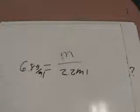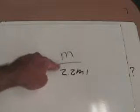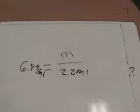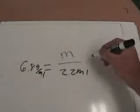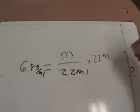Now, in order to solve this, what we have to do is, we're going to undo what's being done to our variable. Mass is being divided by 2.2, the opposite of divided by 2.2 is multiplied by 2.2, so I'm going to multiply both sides by 2.2 milliliters.